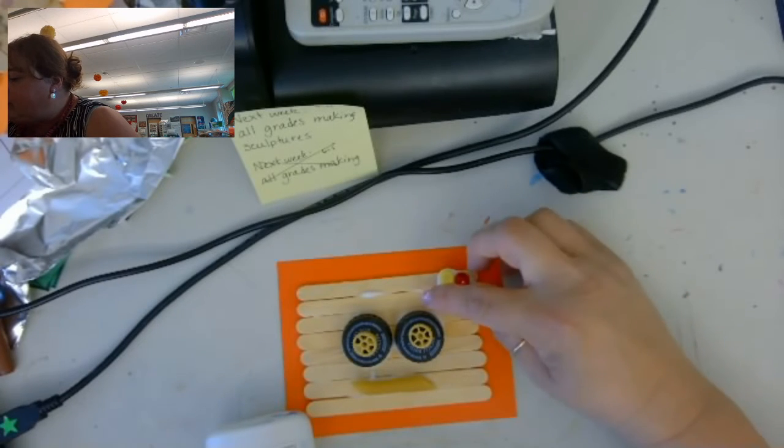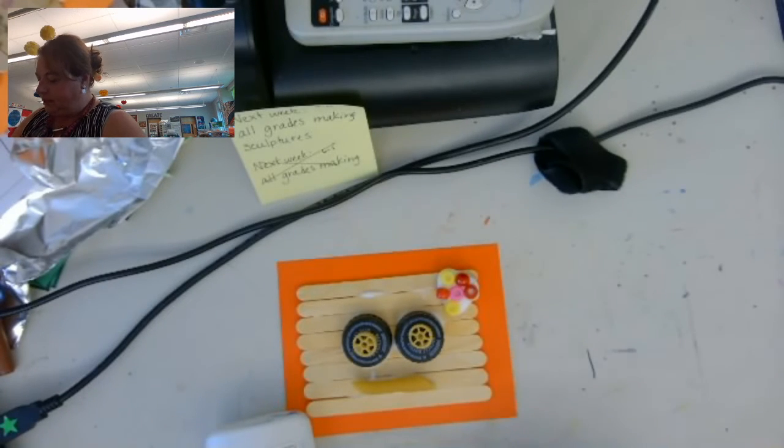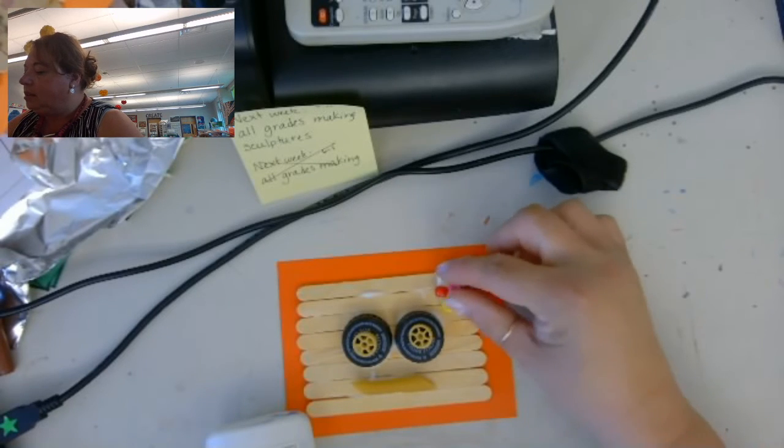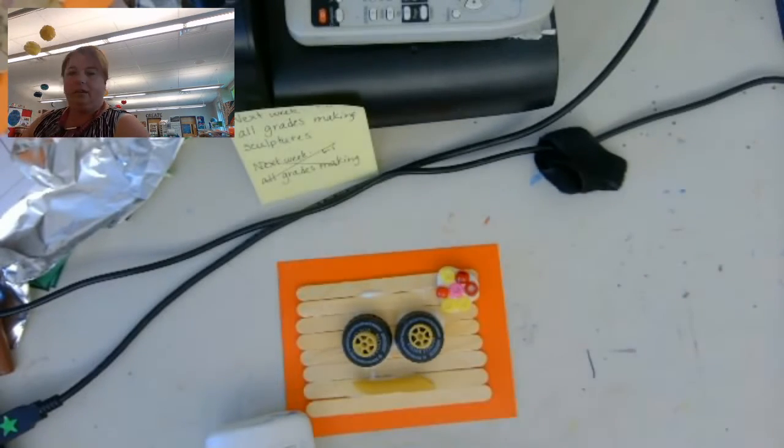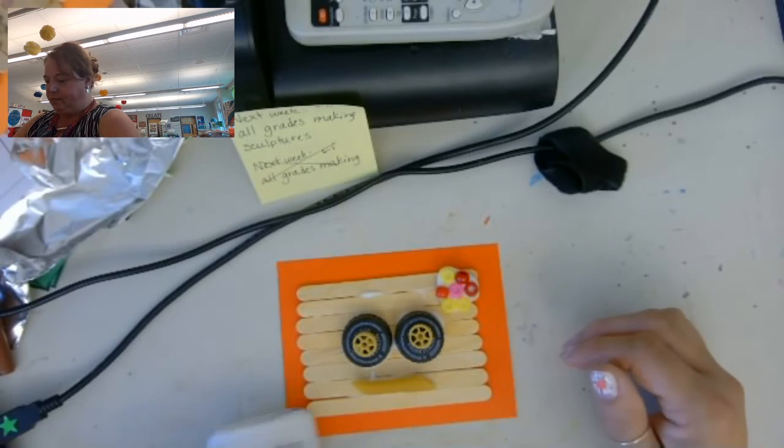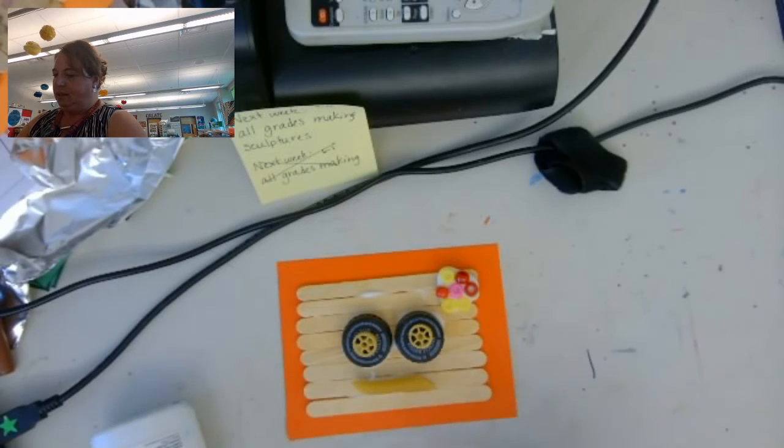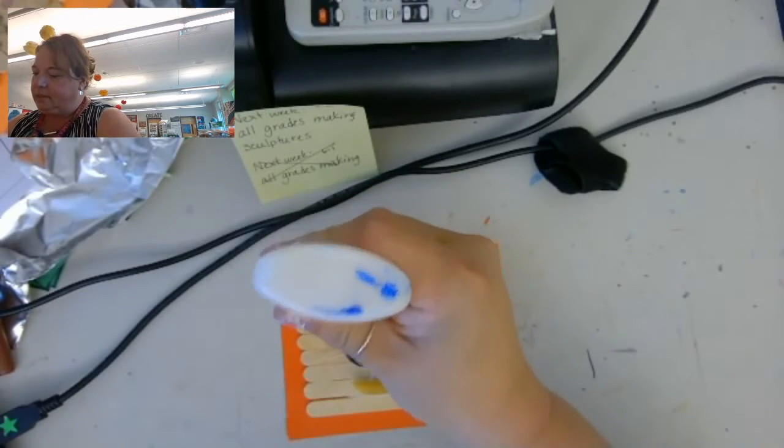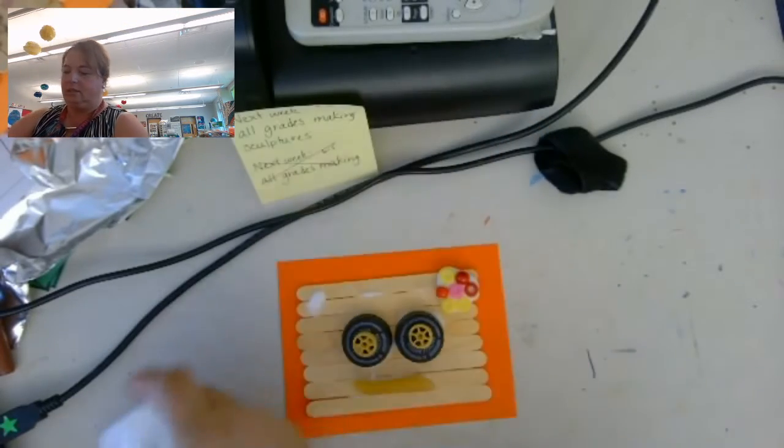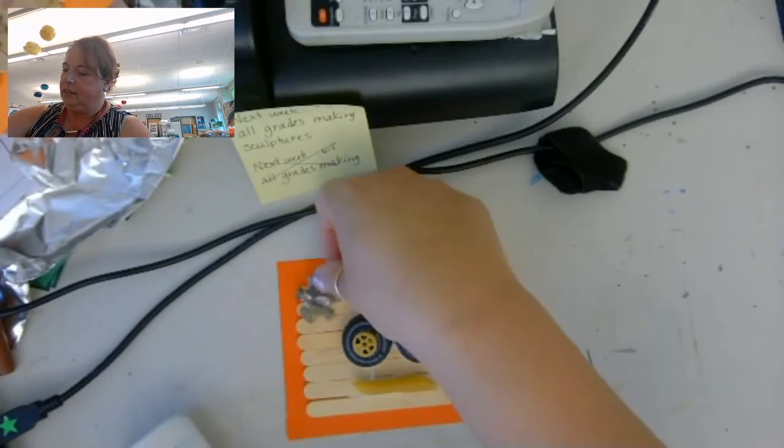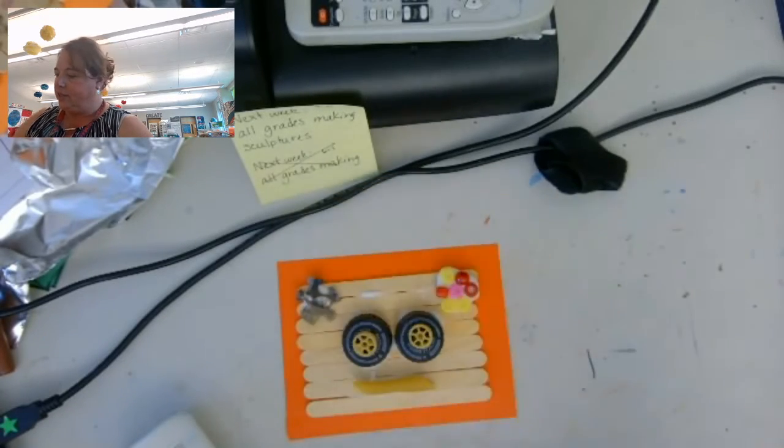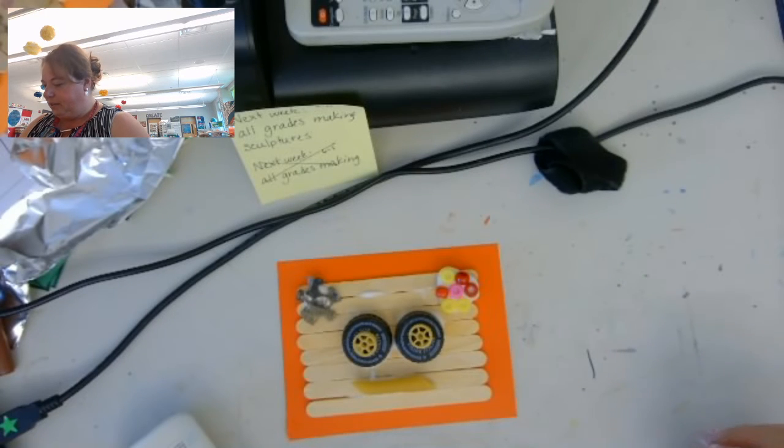Well, the good thing about Elmer's glue is it dries clear. Okay, so I've got some beads on there now. On this side I'm going to glue a puzzle piece. This is from a puzzle that a bunch of pieces are lost from, so I'm just recycling those into something else.